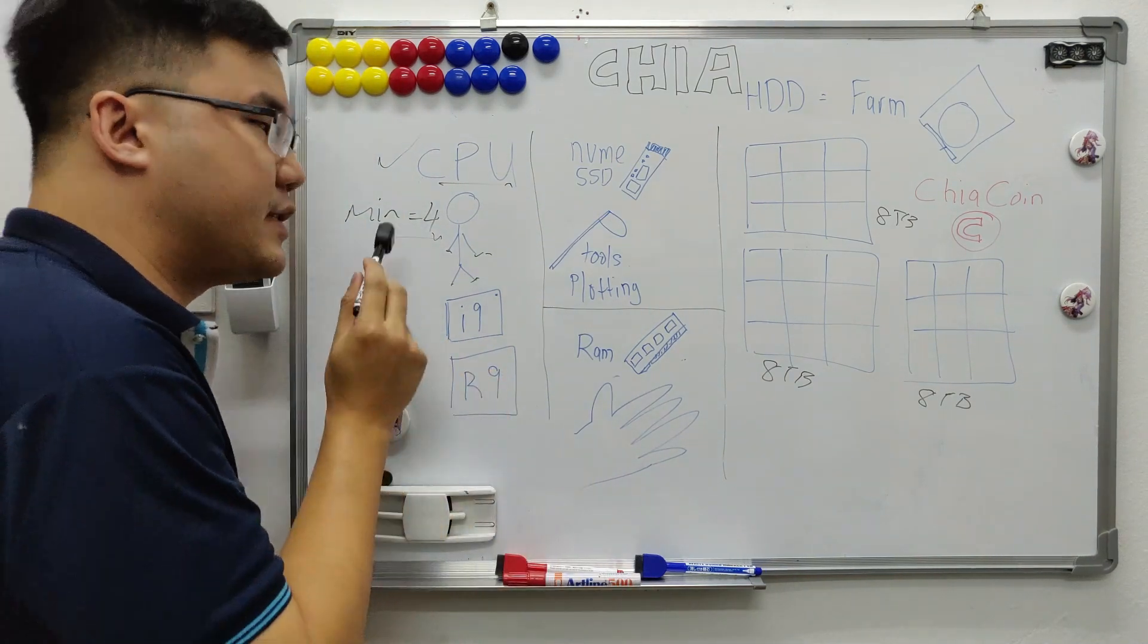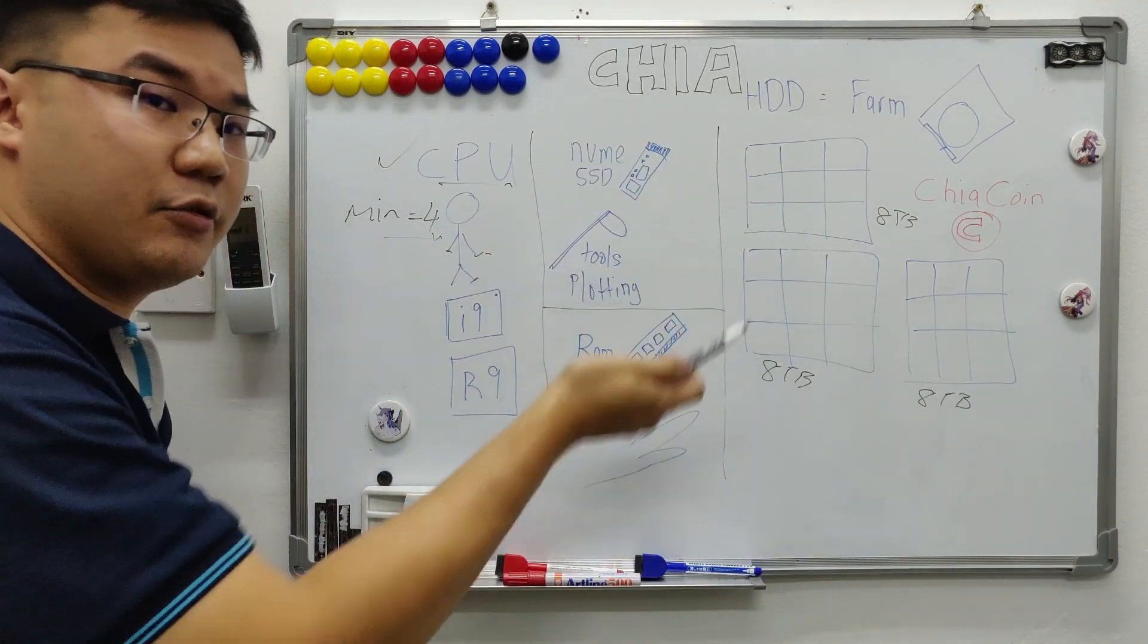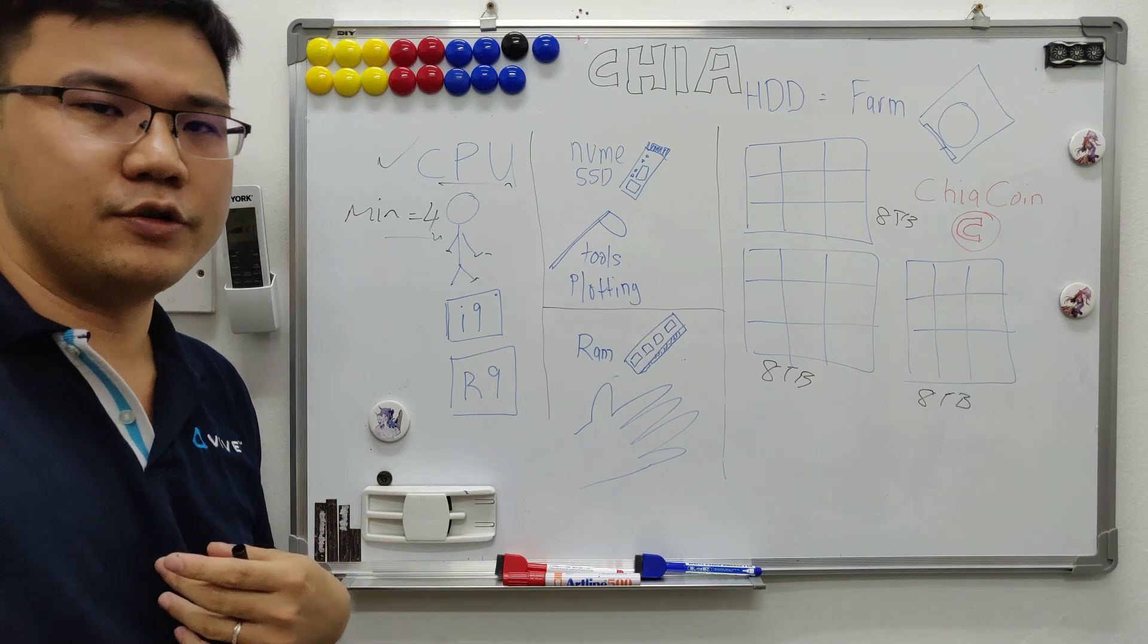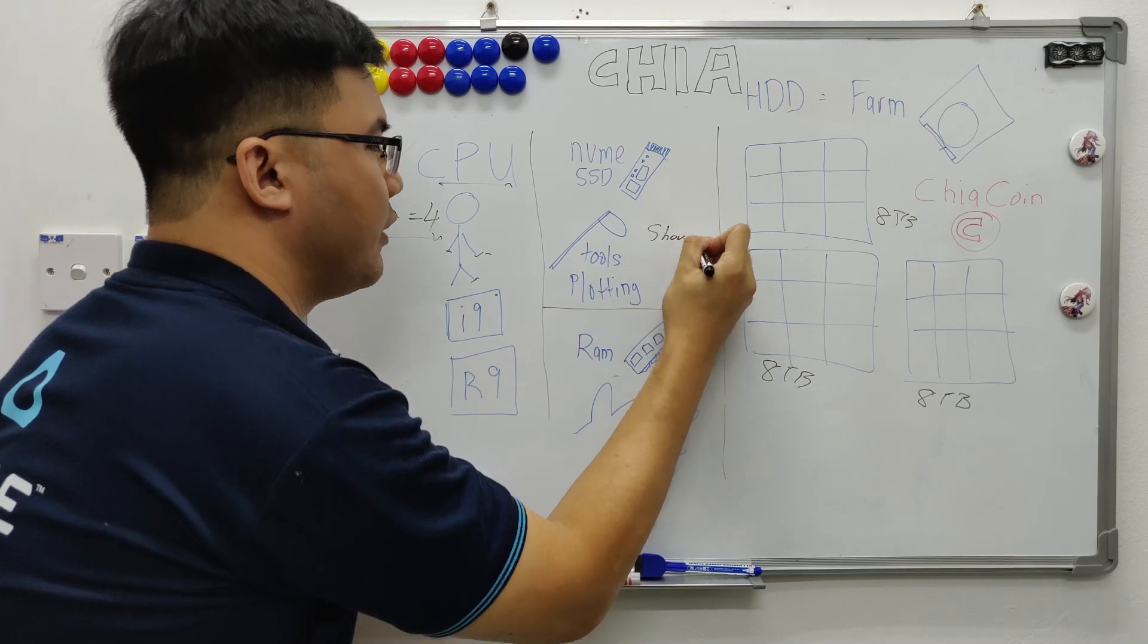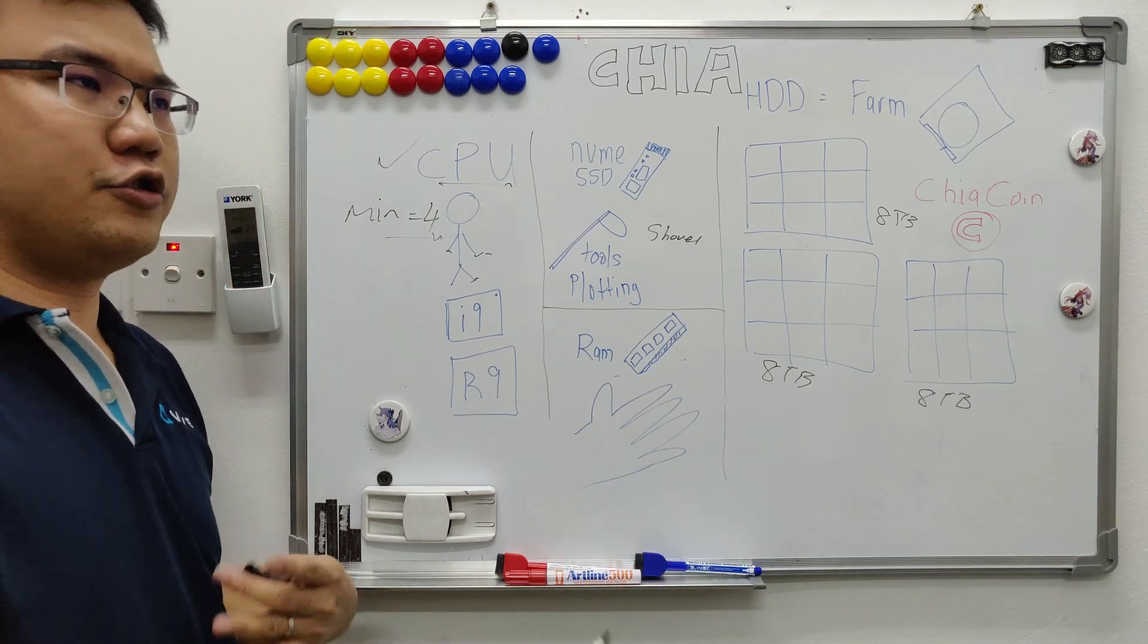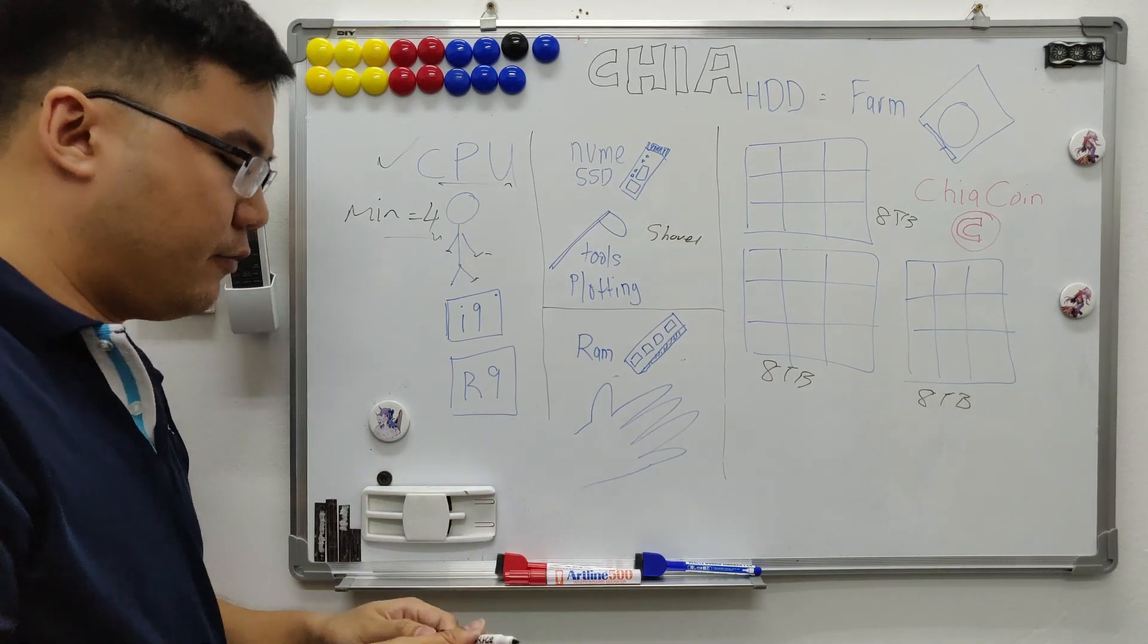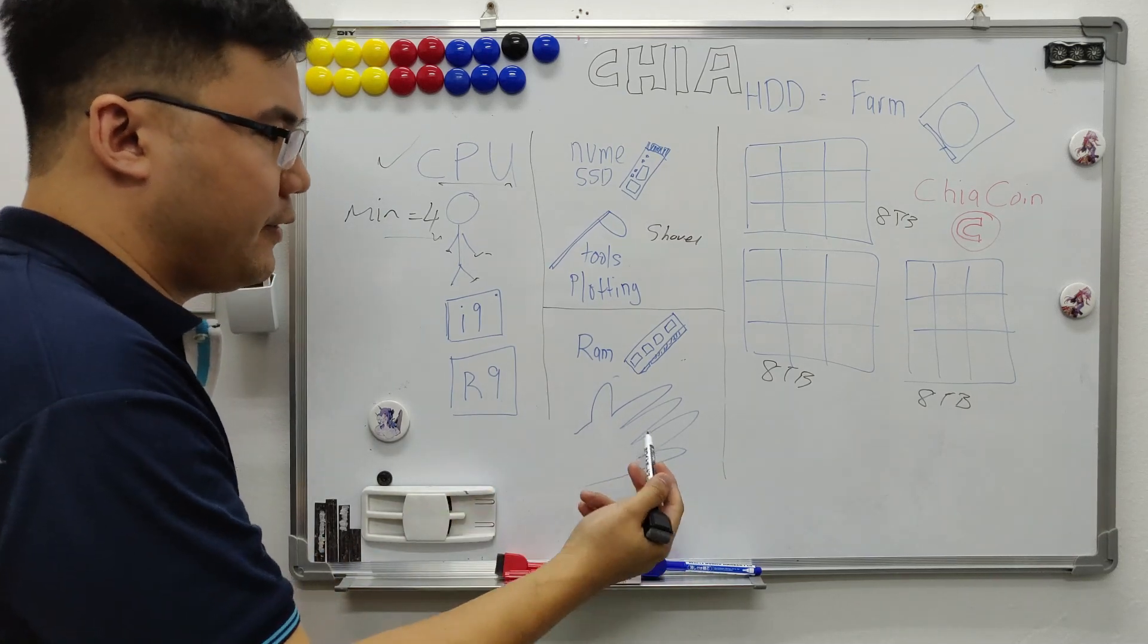So you need to plot these lands to prepare them to get the Chia coin. So how do you prepare? Of course you need to send your CPU which is your worker to work at the land. But they need equipment. So what equipment do they need? So farmer of course you need a hat, you need some gloves and shoes. Of course the most important is your shovel. You need a shovel. For ram, we'll treat it as gloves, your shoes. Those things that hardly break. We'll call those your standard equipment.